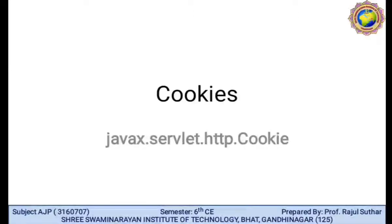In this section, we will discuss cookies. So what do you mean by a cookie? The name of the cookie class is javax.servlet.http.Cookie. Cookie is some little information that can be left on your computer — that is called the client computer — by another computer when we access the internet while browsing. Cookie is automatically stored in your browser like Chrome, Firefox, or Opera.